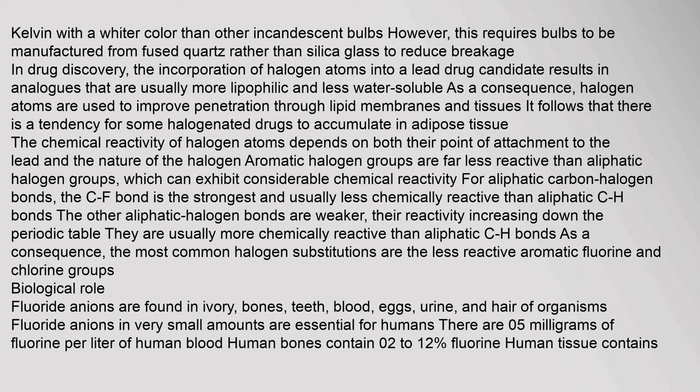In drug discovery, the incorporation of halogen atoms into a lead drug candidate results in analogs that are usually more lipophilic and less water-soluble. As a consequence, halogen atoms are used to improve penetration through lipid membranes and tissues, and there is a tendency for some halogenated drugs to accumulate in adipose tissue. The chemical reactivity of halogen atoms depends on both their point of attachment to the lead and the nature of the halogen. Aromatic halogen groups are far less reactive than aliphatic halogen groups. The C–F bond is the strongest and usually less chemically reactive than aliphatic C–H bonds. The most common halogen substitutions are the less reactive aromatic fluorine and chlorine groups.